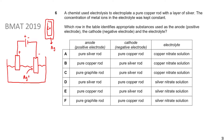The negative terminal must be made of copper, because the silver ions are attracted to the negative electrode which is made of copper. Electrons move toward the copper electrode, and the silver ions deposited there gain those electrons to become silver atoms - pure silver coating the copper rod. So the cathode must be pure copper.